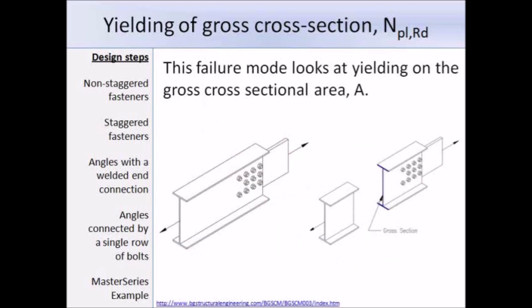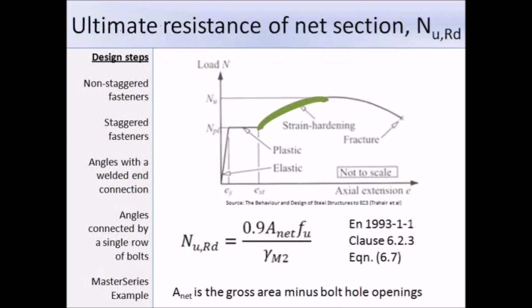For plastic design resistance we deal with the gross cross-sectional area, located away from the fasteners. The design plastic resistance is the gross area times the yield strength divided by the partial factor γM0. For the design ultimate resistance of the net cross-section, N_u,Rd, equation 6.7 states it equals 0.9 times the net area times the ultimate tensile strength over partial factor γM2. For most cases the net area is the gross area minus the area of fastener holes. At the ultimate load, steel begins to neck and the load decreases until the member fails.